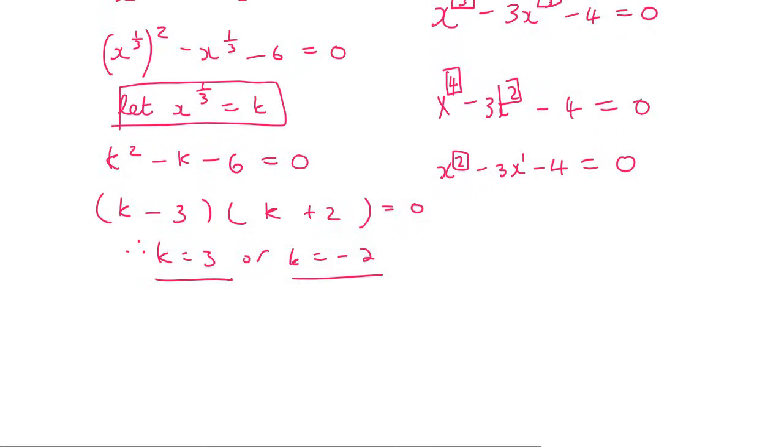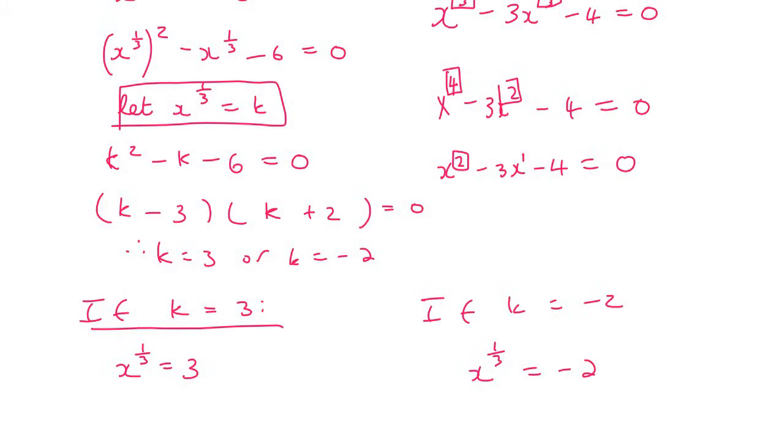So then what we do is we come back to this. And so we need to use each of these now. So if k equals 3, then we can replace the k with x^(1/3). So we can say x^(1/3) = 3. And now to get to solve these types of equations, you take the reciprocal on both sides. And what we'll find is that x equals, because this just becomes a 1. That cancels out. And then 3 to the power of 3 is 27.